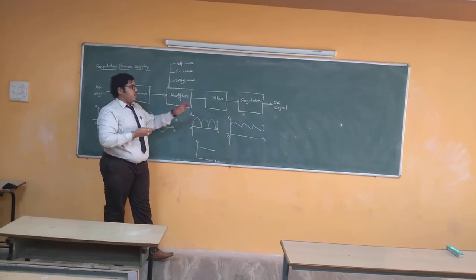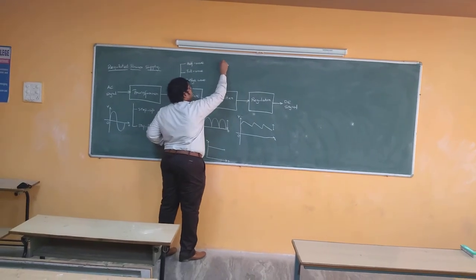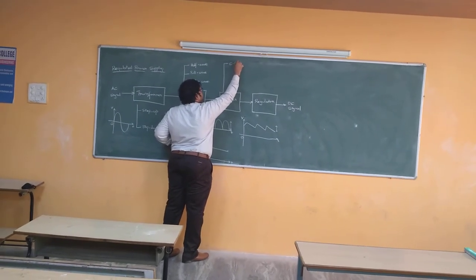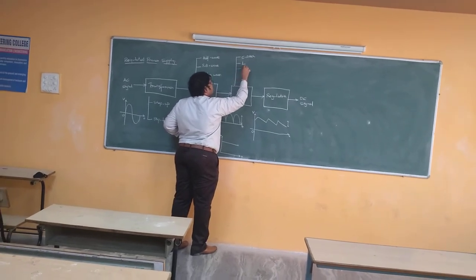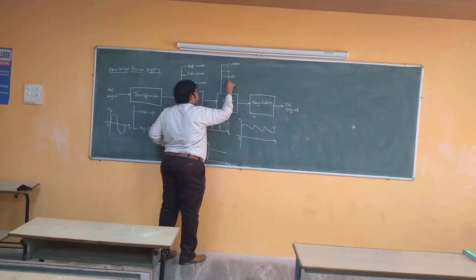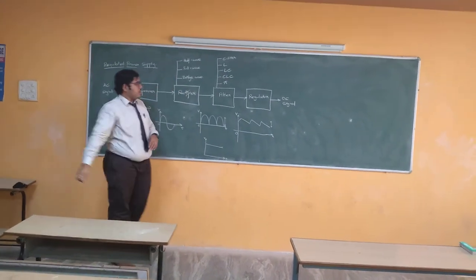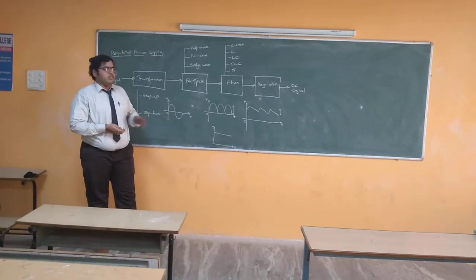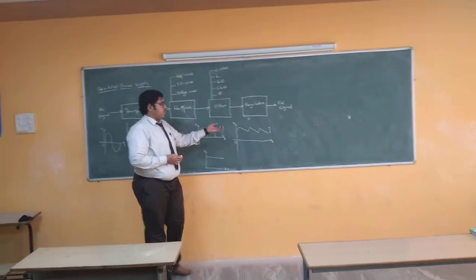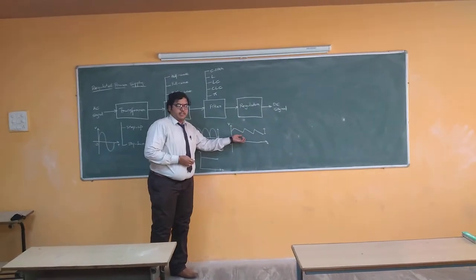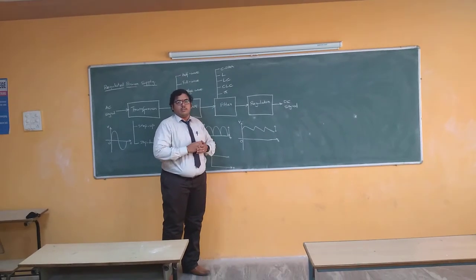For this particular operation, we are classifying the filters into different types: we have C filter, L filter, LC filter, CLC filter, and also a pi filter. These are the different classifications of a filter circuit, where the pulsating DC signal is converted into another pulsating DC signal but with the ripples being reduced as much as possible.